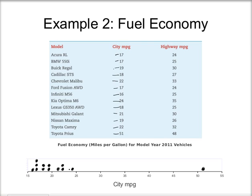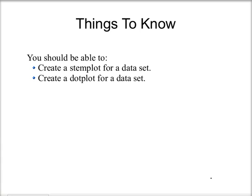You can see that most of the cars are grouped between 15 and 25 miles per gallon city gas mileage, and then I've got an outlier of the Prius, which is the only hybrid on this chart. Here is the dot plot drawn by the computer. So things you should know for this section: you should be able to create a stem plot for a data set and create a dot plot for a data set.